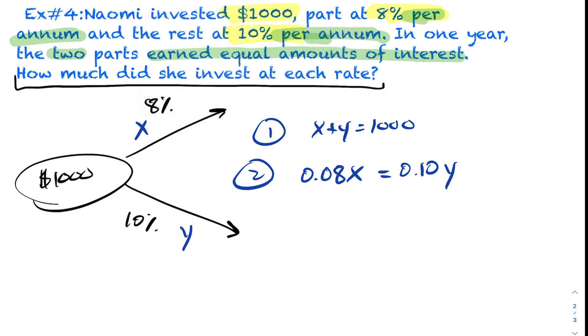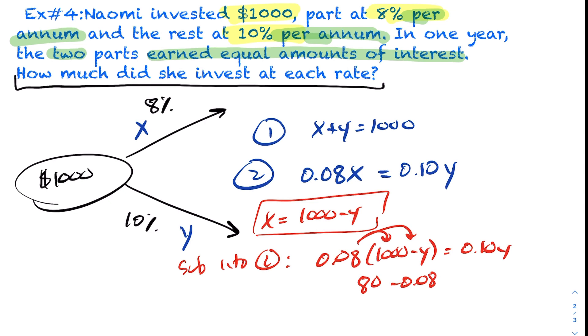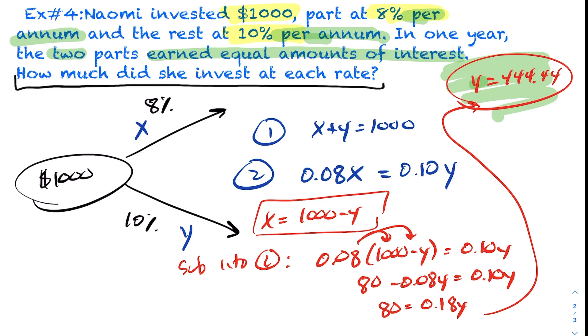All right, so now that we have that, we're going to isolate. In this case, X is 1,000 minus Y, and I'm going to sub that into equation 2. We get 0.08 times 1,000 minus Y is 0.10Y. And continuing this, you're going to get 80. If we do distribution, minus 0.08Y is 0.10Y. And now we get 80 is 0.18Y. Divide this out. If you take 80 and divide that by 0.18, you get $444.44. So that represents the amount of money invested in the 10% investment.